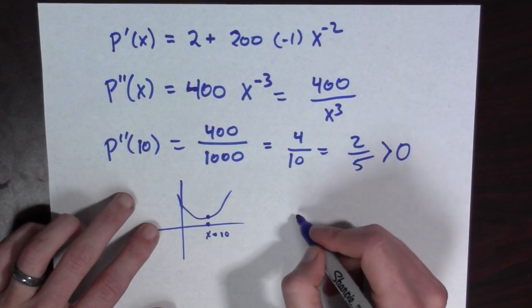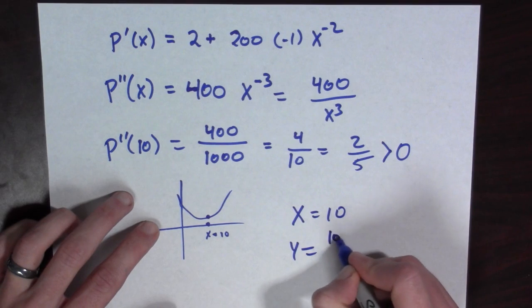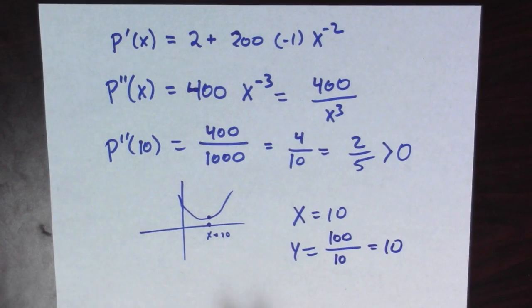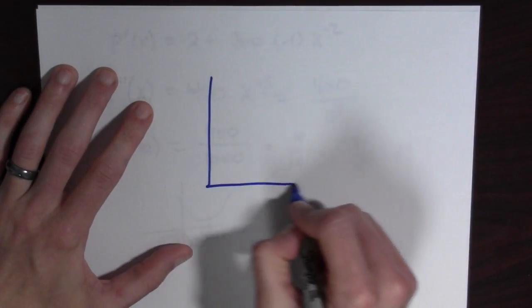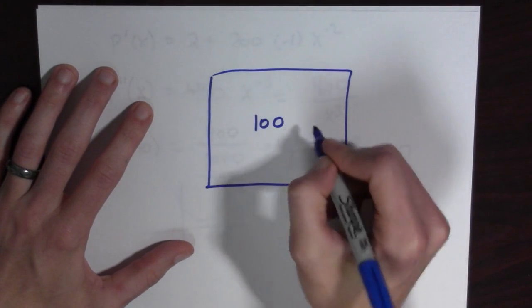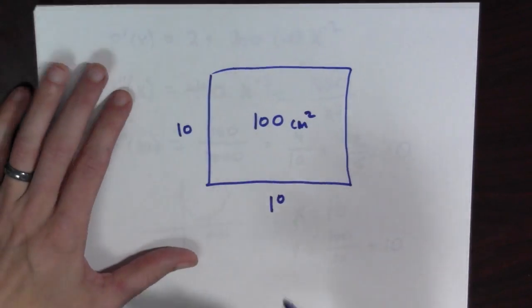So, let's see, that means that x is equal to 10, and y is equal to 100 divided by x, in this case 100 divided by 10, which equals 10. Aha, this tells us that the rectangle with the smallest perimeter and area 100 centimeters squared is the 10 by 10 rectangle, the square.